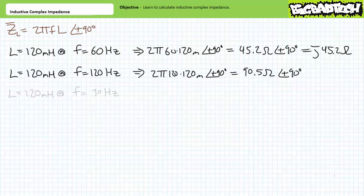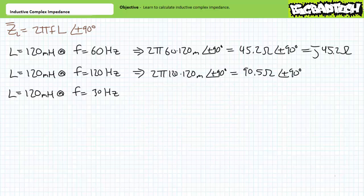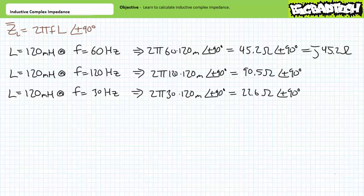Second question: what happens to the complex impedance of this 120 millihenry inductor if I halve the original frequency down to 30 hertz? Again, no math — just think about it. You should realize that the magnitude of the complex impedance of the inductor should decrease, since the complex impedance of purely inductive elements is proportional to 2πfL. Given frequency has been cut in half, the magnitude of inductive impedance will be half its original value. The angle, however, will remain fixed at positive 90 degrees. Substituting in the given values at 30 hertz, we find the magnitude of the inductive complex impedance has dropped to roughly 22.6 ohms, yet the angle remains fixed at positive 90 degrees.